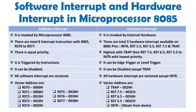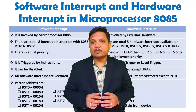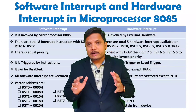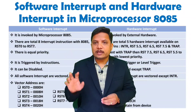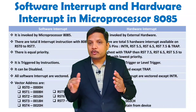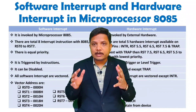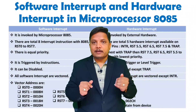With the INTR line, software RST instructions are executed. In terms of hardware we receive the interrupt from the INTR terminal, but service is provided by software instructions. So hardware interrupts in microprocessor 8085 are 5 in total, and the basic steps for execution have been explained.